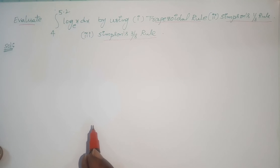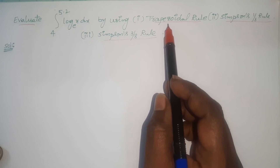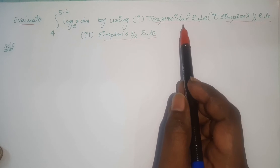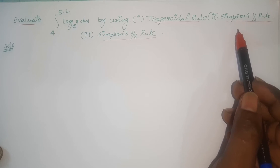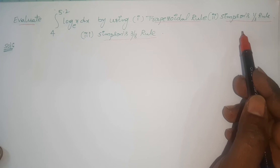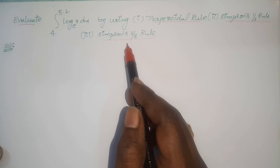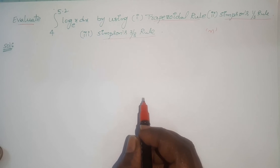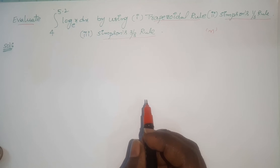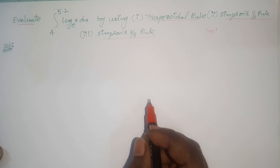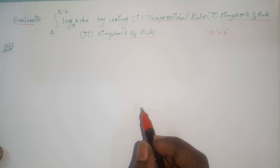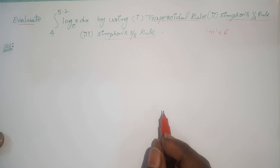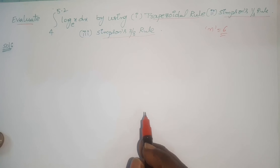First of all we should divide the range 4 to 5.2 into equal number of sub-intervals. There is no restriction to apply the trapezoidal rule, but there is a condition to apply Simpson's one-third rule: the number of sub-intervals n should be an even number. The restriction for Simpson's three-eighth rule is that n should be a multiple of 3. Here I will divide the range into 6 equal parts because 6 is even and also a multiple of 3, so n=6 works for all three formulae.